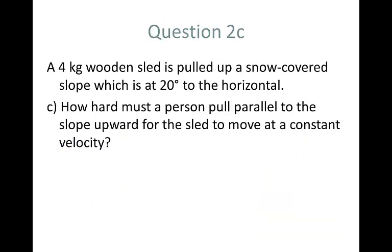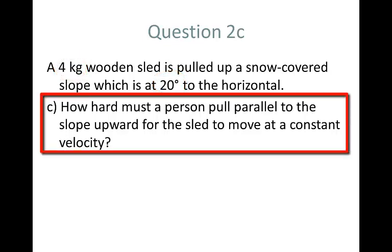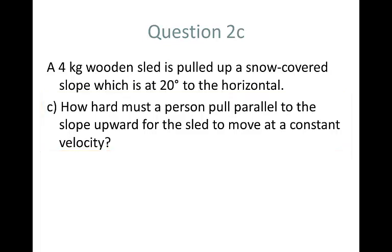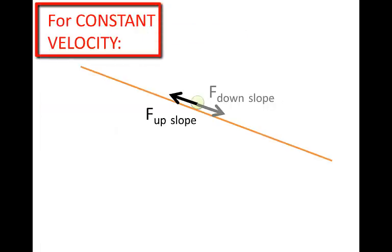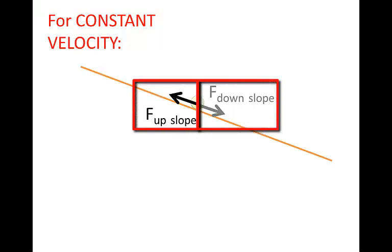Now let's add another part to question 2. We still have this 4 kg wooden sled. The angle of the slope is still 20 degrees. But now we're asked, how hard must a person pull parallel to the slope upward for the sled to move at a constant velocity. If the sled is going to move at constant velocity, then it must be in equilibrium. There must be no resultant force. The person will have to pull up the slope just as hard as the forces which act on the sled down the slope.